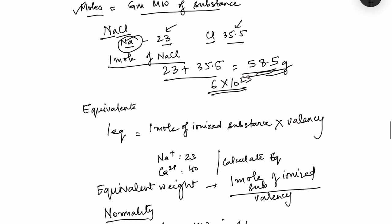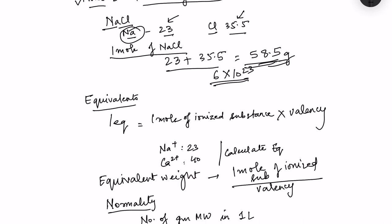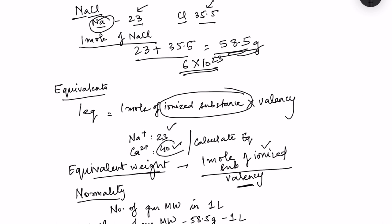Coming to the next concept: equivalence. Equivalent is used only for ionized substances. For sodium the weight is 23 and for calcium it is 40 — these are moles. To calculate equivalent weight, we divide one mole of the ionized substance by its valency. For calcium: 40 divided by 2 equals 20. For sodium it is 23, since the valency is one. That is equivalent weight.